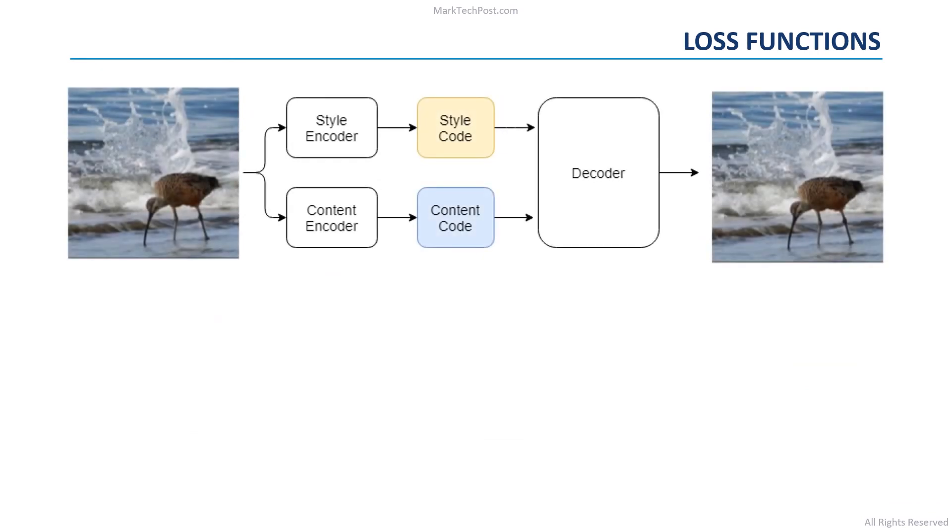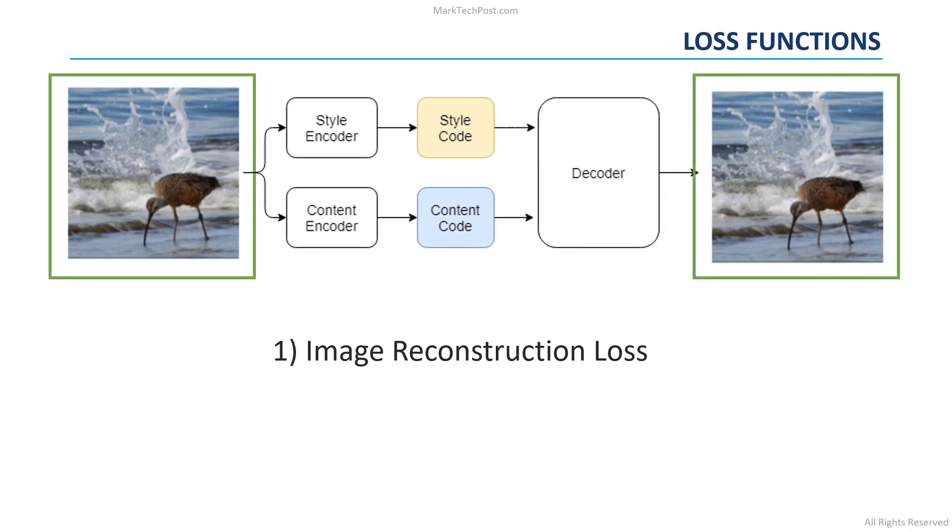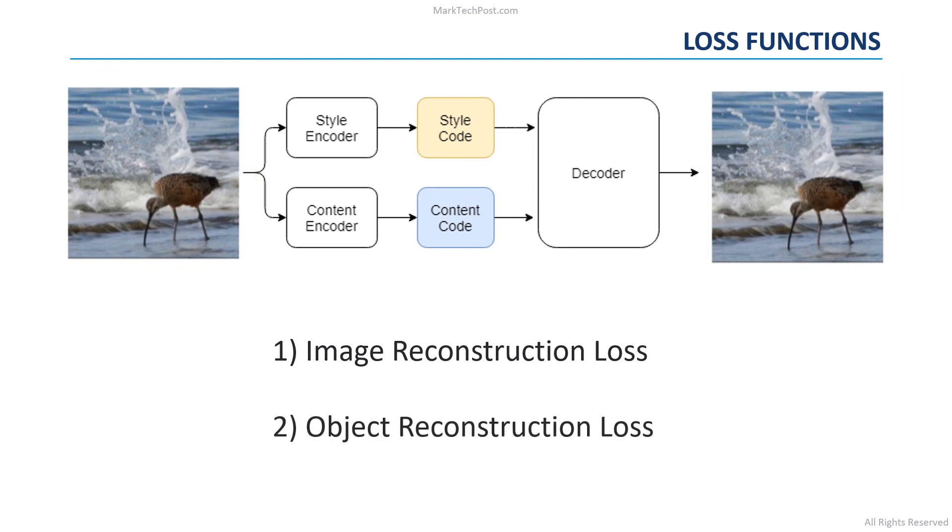Now, let's focus on the loss functions used to train this sentiment-aware GAN. The image reconstruction loss is used to minimize the difference between an input image and the image generated by the decoder by using the content and the style codes of the input image. The object reconstruction loss is similar to the previous one, but it focuses on the object-level style of the input image.